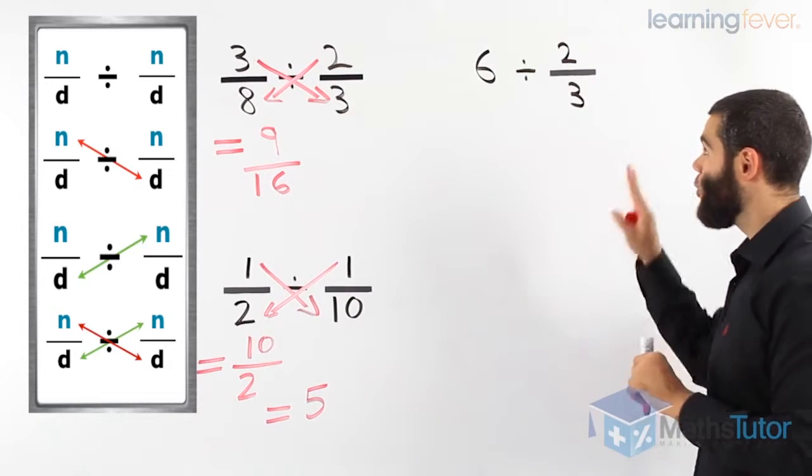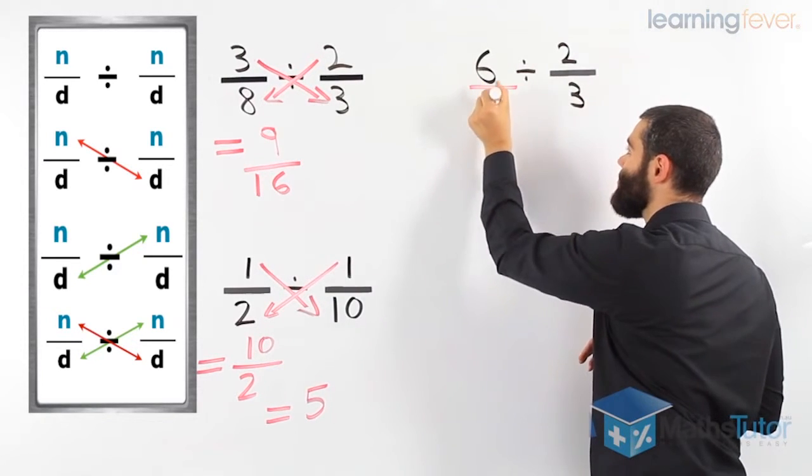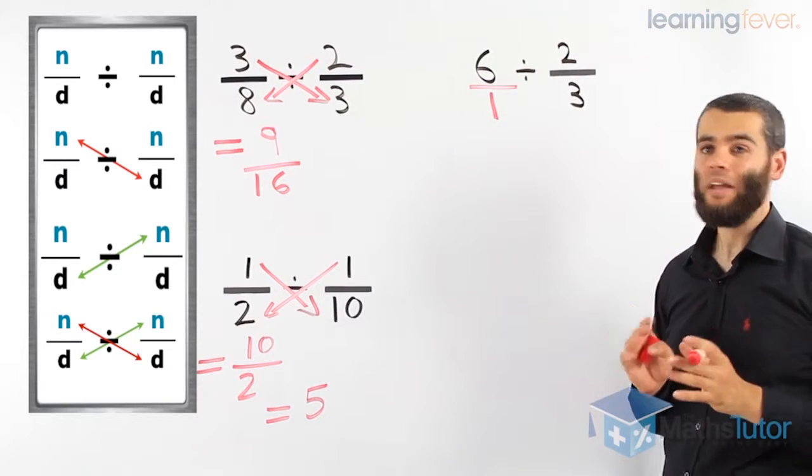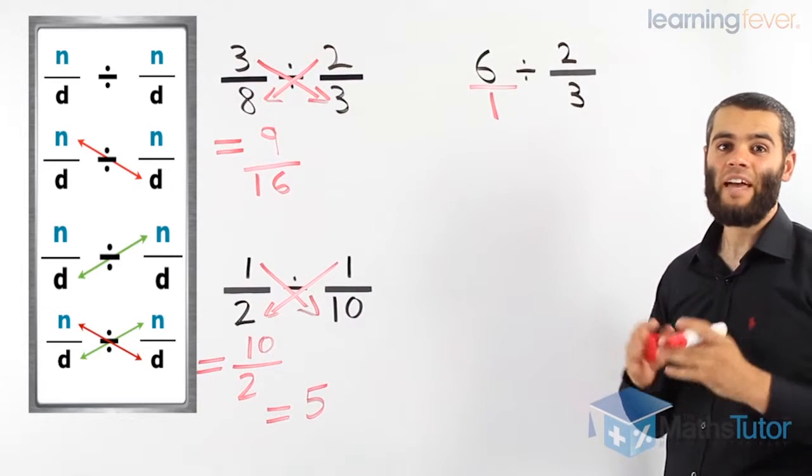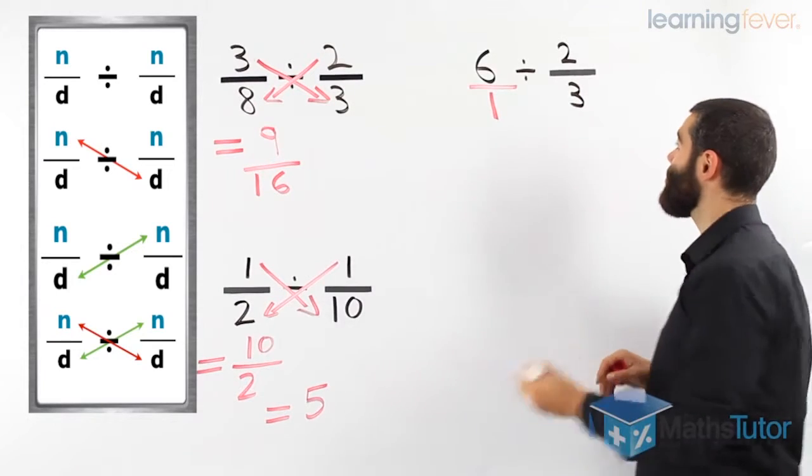Look at this. We know that any whole number is in reality over 1. So we write 6 over 1 divided by 2 thirds. Guess what? Now we have a fraction divided by a fraction. We follow the same procedure.